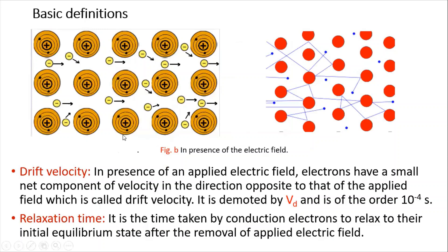Now we will try to understand the definition of drift velocity. The concept of drift velocity arises in the presence of an electric field. In the absence of an electric field, all electrons move in random directions. But the moment an electric field is applied to the metal, all the free electrons try to move only in one direction — in the direction opposite to the applied electric field. This velocity is called drift velocity.